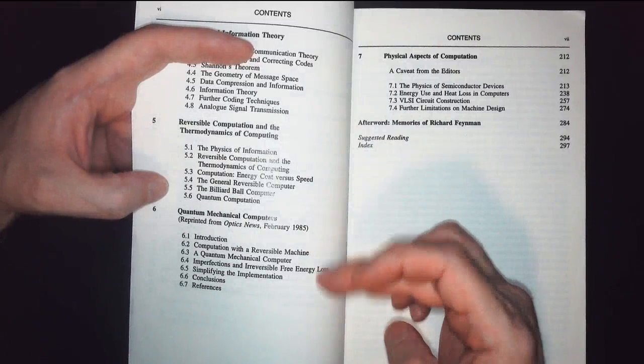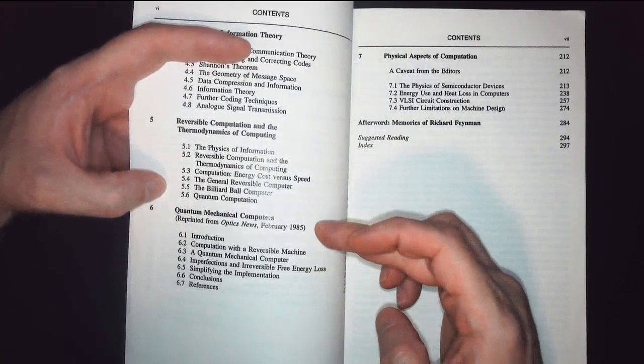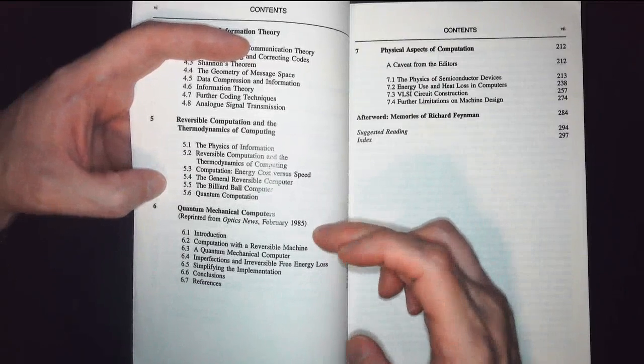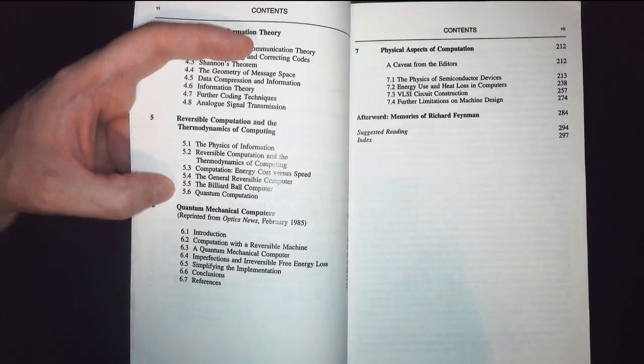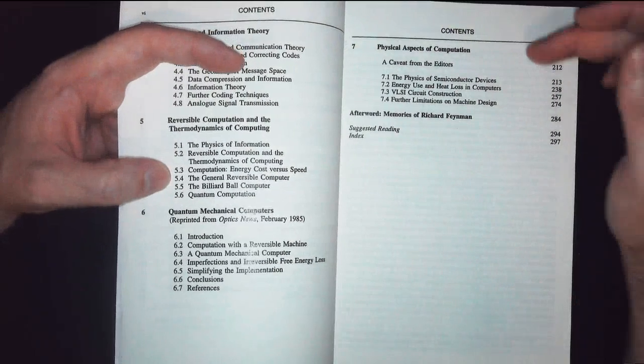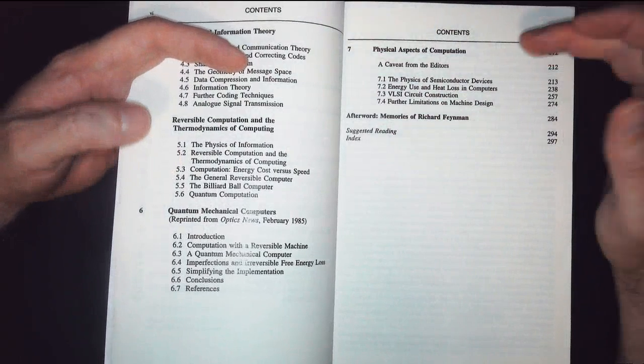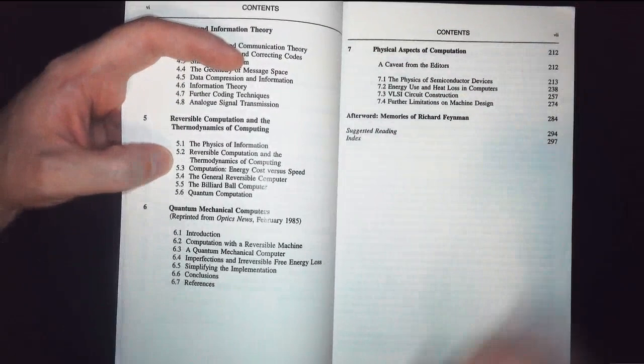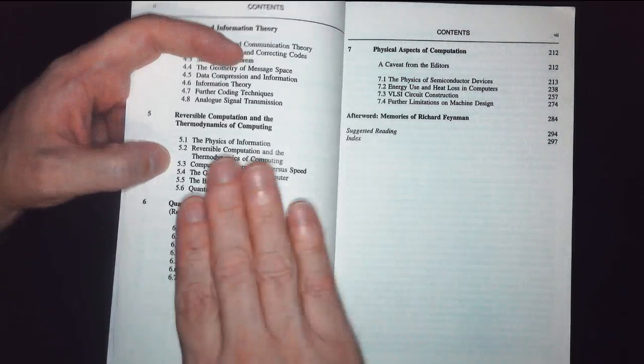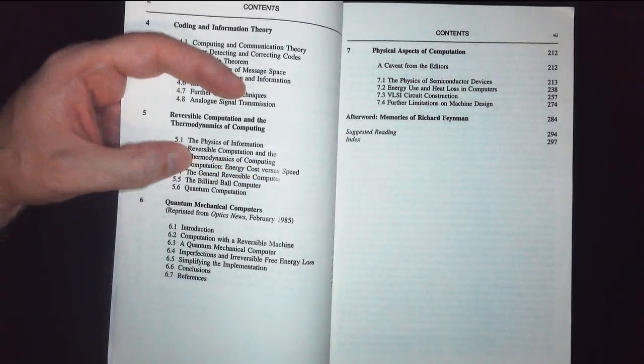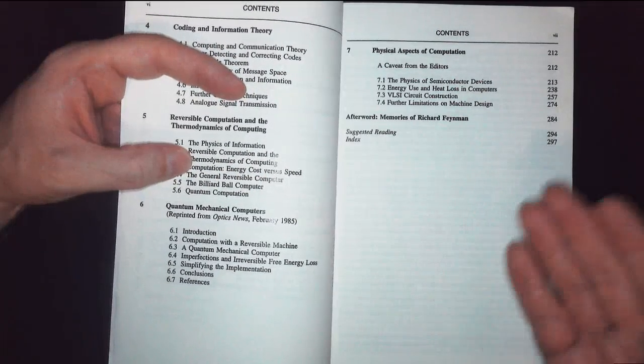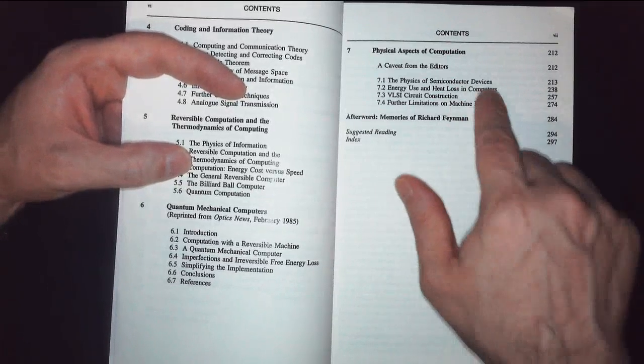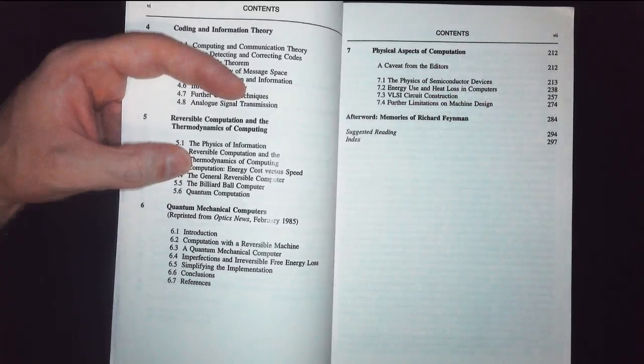And here's the beginnings of quantum computing. Some ideas about what's going to happen with a quantum computer from 1985, from Optics News in 1985. The physical aspects of computation, a caveat from the editors. When they published this in 1996, the technology that Feynman was talking about here was already obsolete. So they're talking about some of the changes since then.